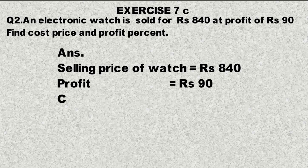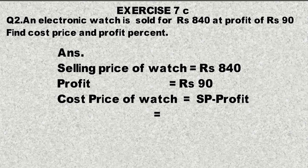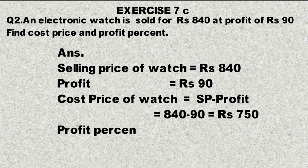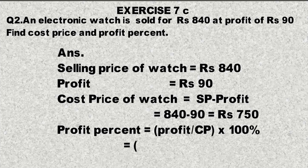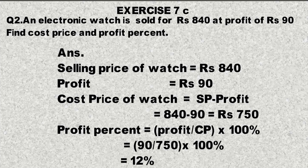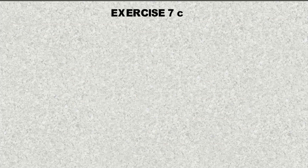Statement: Selling price of watch is equal to 840. Profit on watch is equal to 90 rupees. Cost price of watch is equal to selling price minus profit, which is 840 minus 90, equal to 750 rupees. Now profit percentage equals profit over cost price multiplied by 100%, which is 90 over 750 multiplied by 100%, giving us 12%.